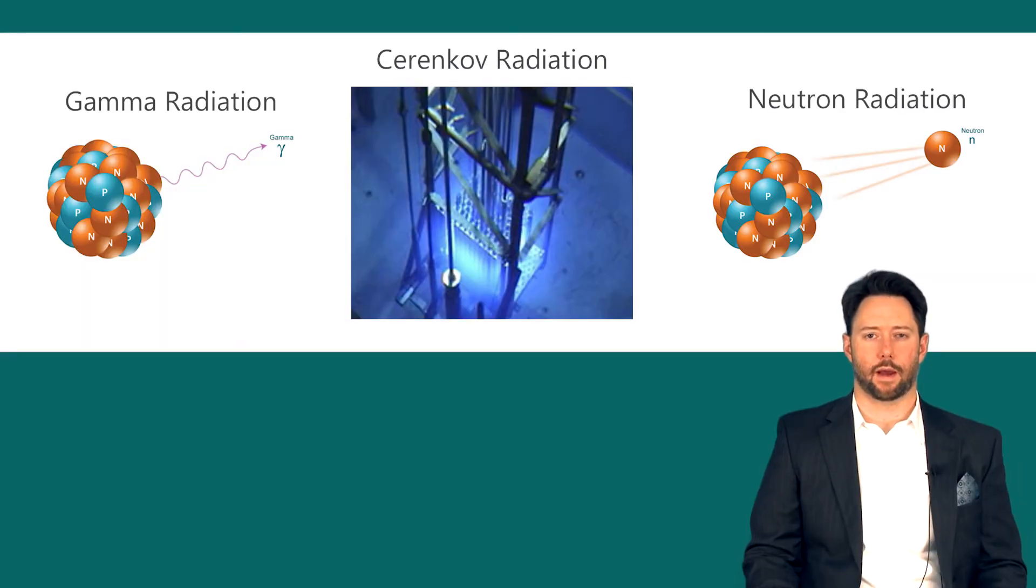In this section we are going to talk about spent fuel radiation, and there are three types of spent fuel radiation: gamma radiation, Cherenkov radiation, and neutron radiation.